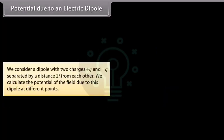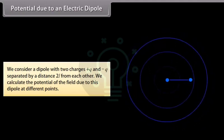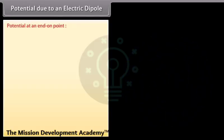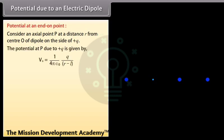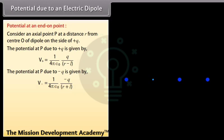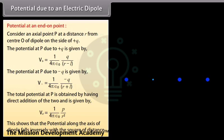Potential due to an electric dipole: Consider a dipole with charges +Q and −Q separated by distance 2L. For an axial point P at distance R from center O on the side of +Q, the potential due to +Q is V₊ = (1/4πε₀) × Q/(R−L), and due to −Q is V₋ = (1/4πε₀) × (−Q)/(R+L). The total potential at P is V_E = (1/4πε₀) × P/R², showing that the potential along the axis of the dipole falls inversely with the square of distance.